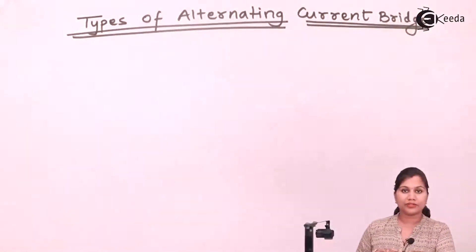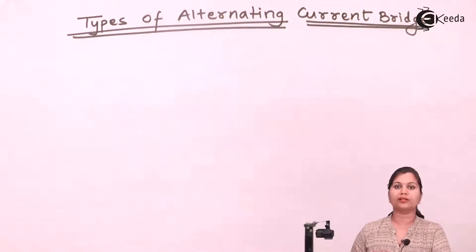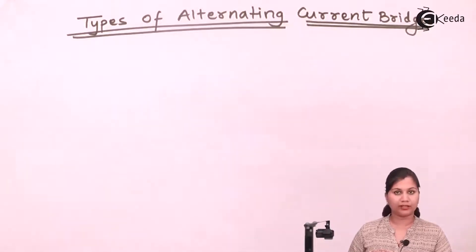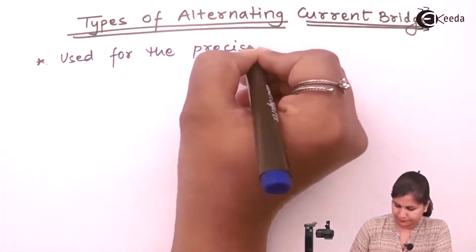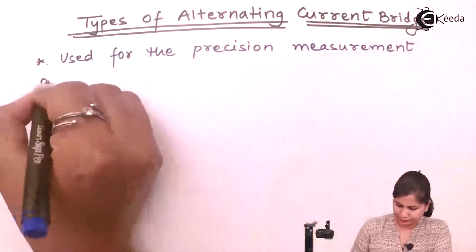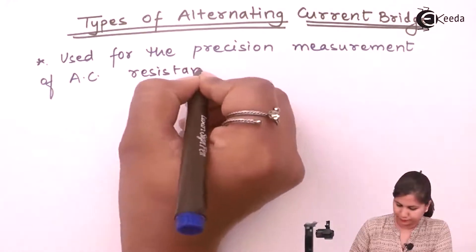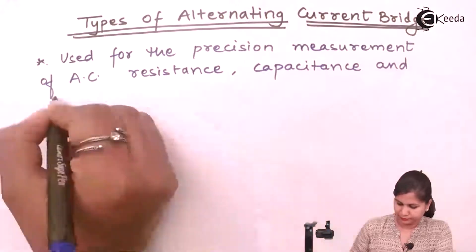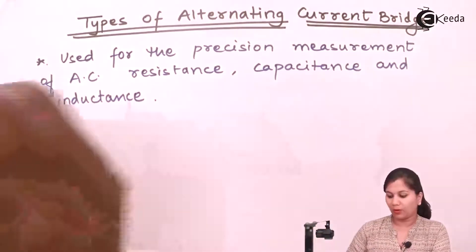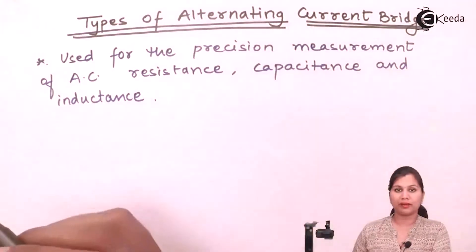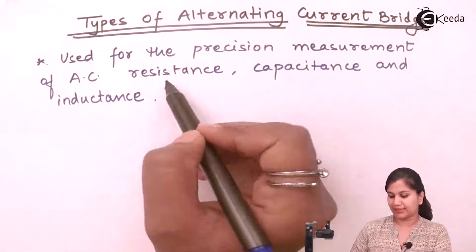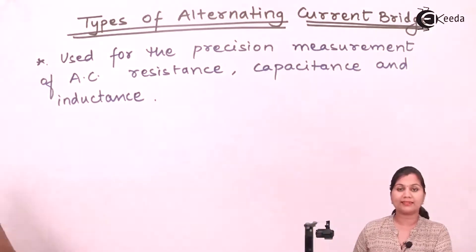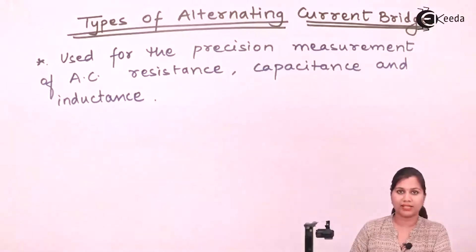The alternating current bridges are widely used for the measurement of AC resistance, capacitance and inductance. They are very precise and very accurate instruments. We can say that the alternating current bridges are used for the measurement of AC quantities — AC parameters like resistance, capacitance and inductance. For the precise and accurate measurement of these parameters, we can use the alternating current bridges.